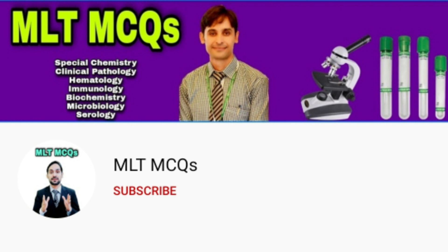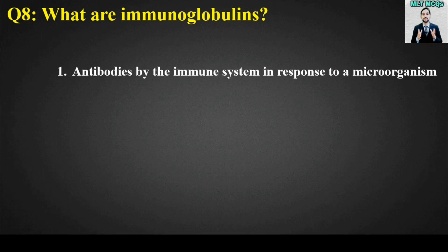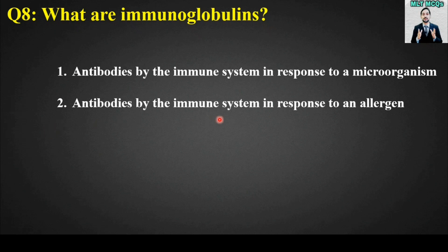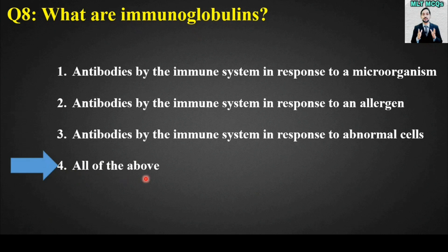MCQ number 8: What are immunoglobulins? Options are: antibodies produced by the immune system in response to a microorganism, in response to an allergen, in response to abnormal cells, or all of the above. The right answer is option number 4 — all of the above. Immunoglobulins are antibodies produced in response to microorganisms, allergens, and abnormal cells.